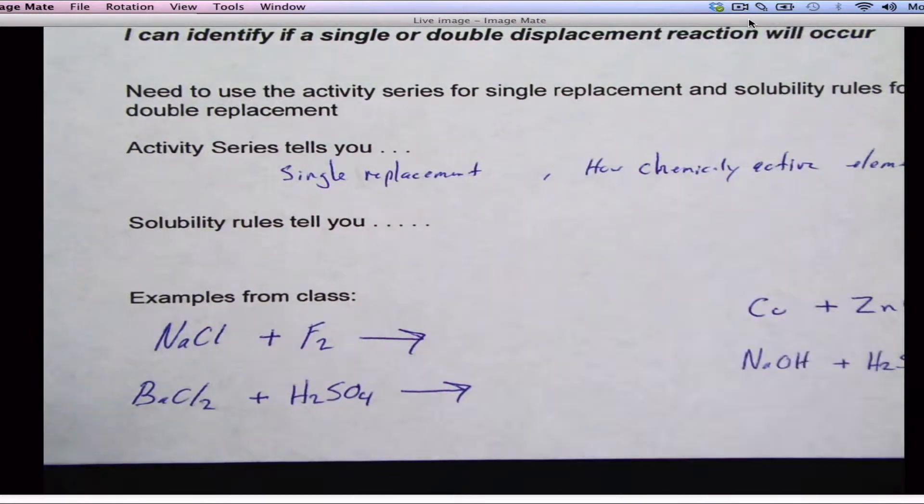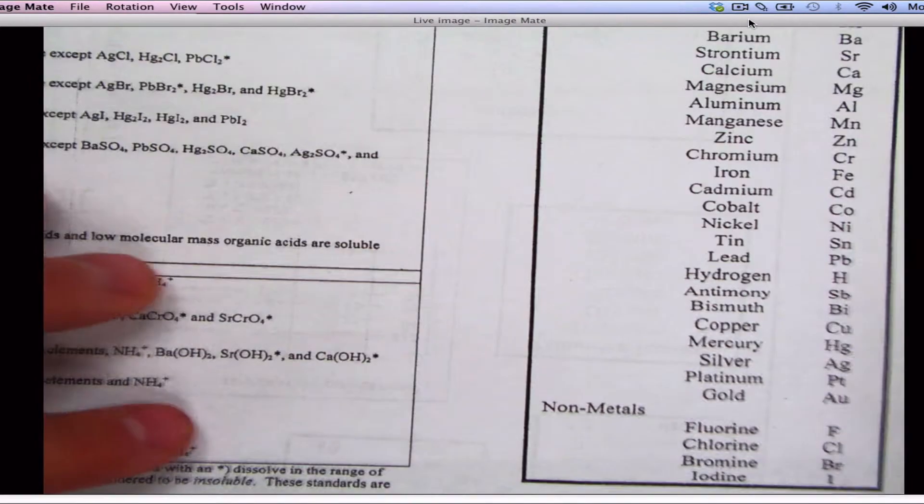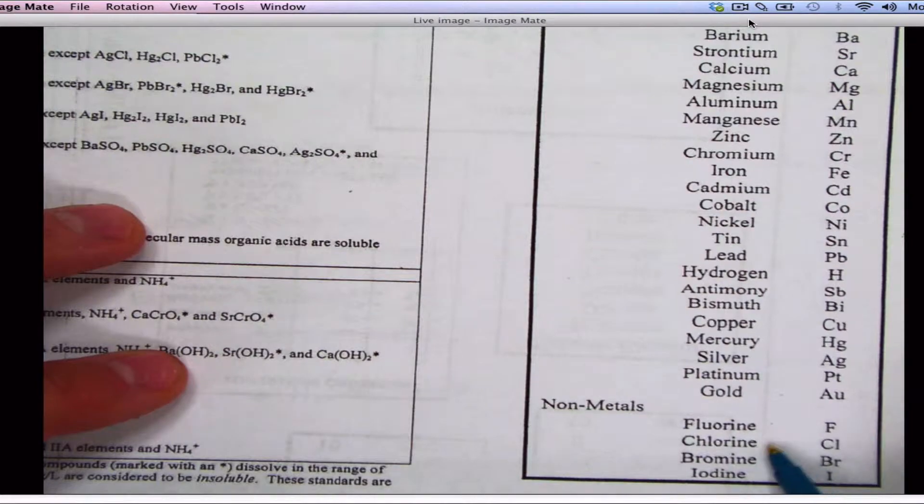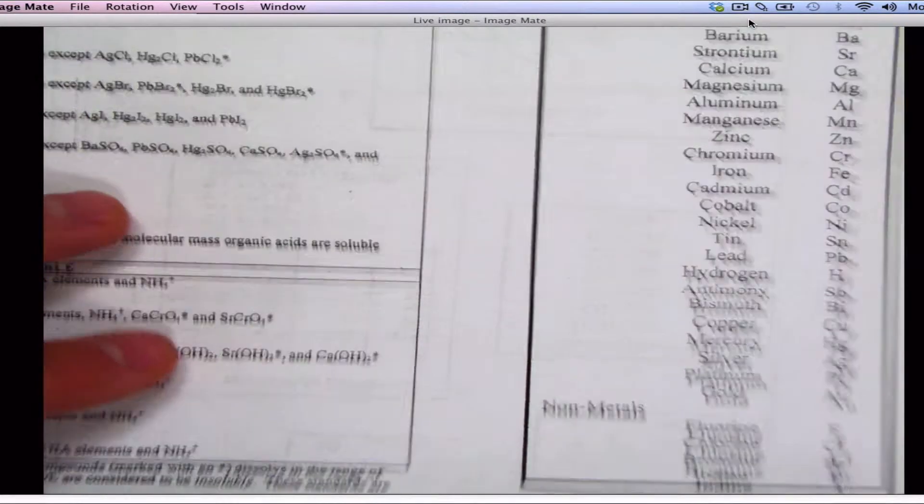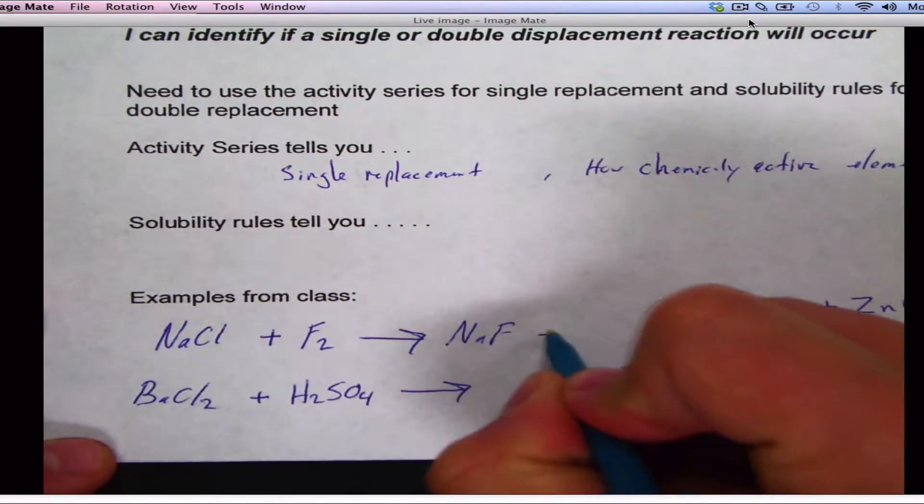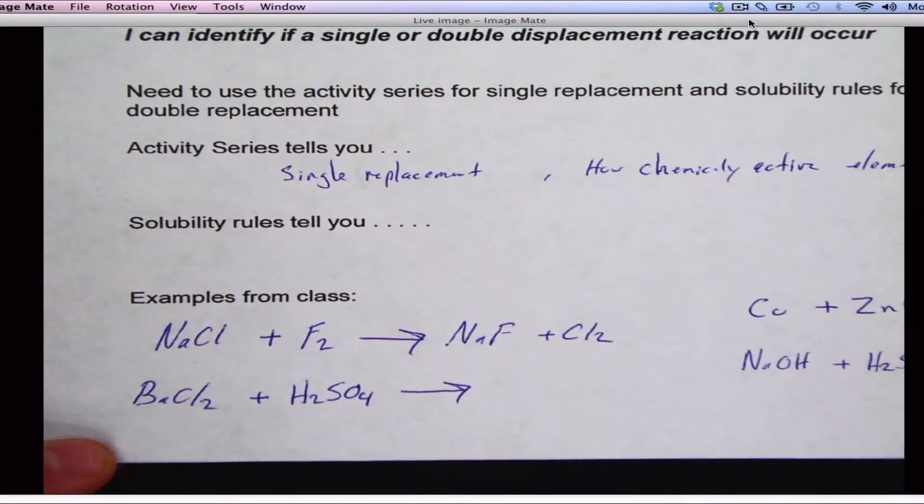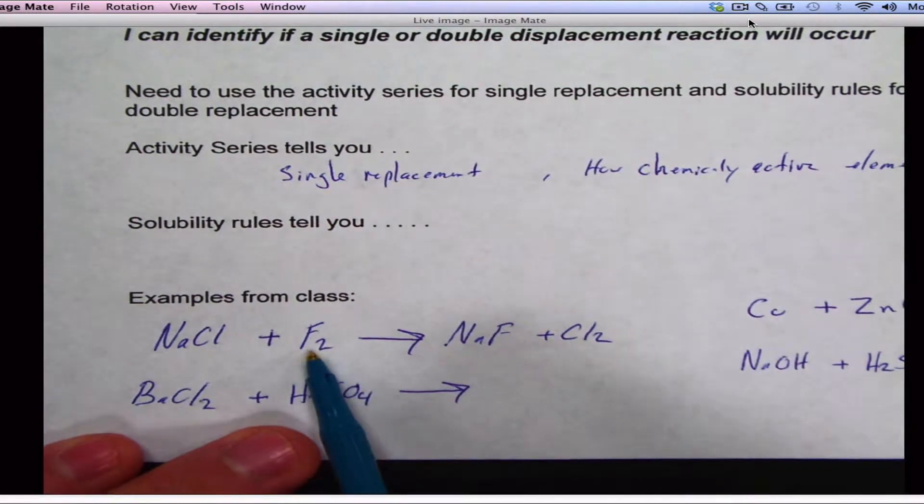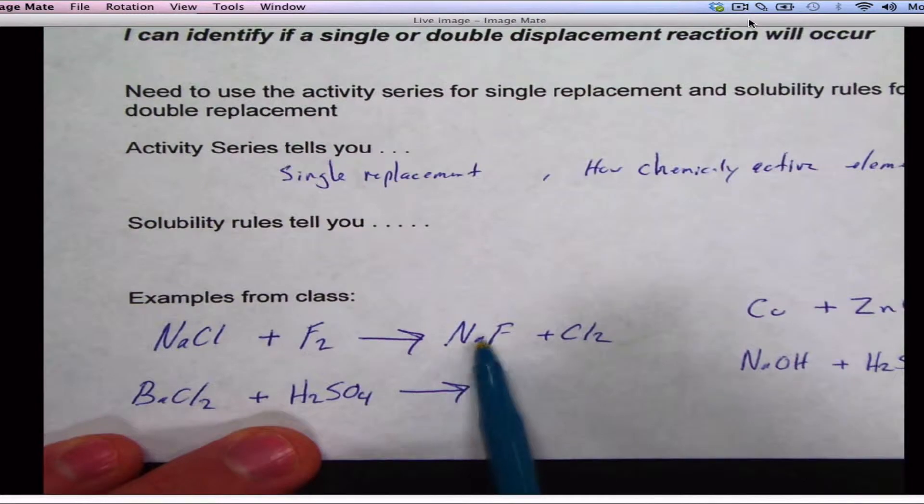So, let's take a look at our activity series here. So, we've got fluorine and we've got NaCl. I mean, sorry, fluorine and chlorine. Fluorine, which is the lone element, is higher than chlorine. So, therefore, the reaction will take place. Alright, so then I say NaF plus Cl2. That's it. All the activity series tells you is the reaction will happen. If this wasn't higher, you would just put NR, no reaction, if it wasn't higher.